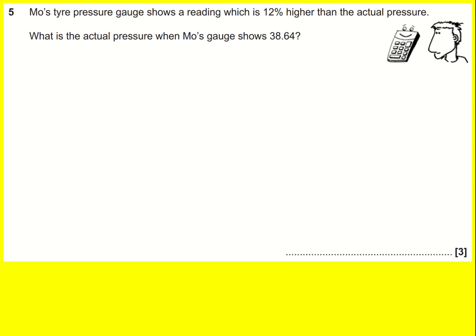In this question we have an actual pressure and then we've got a reading that's 12% more and that one is 38.64. First thing to remember is that you can't just decrease that by 12% because if you increase by say 10% and decrease by 10% you don't get back to the start. The same happens for 12%, any percentage in fact.